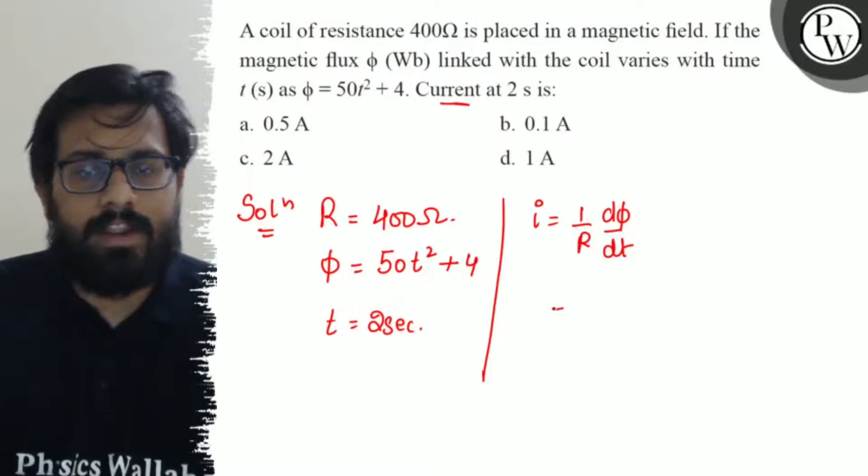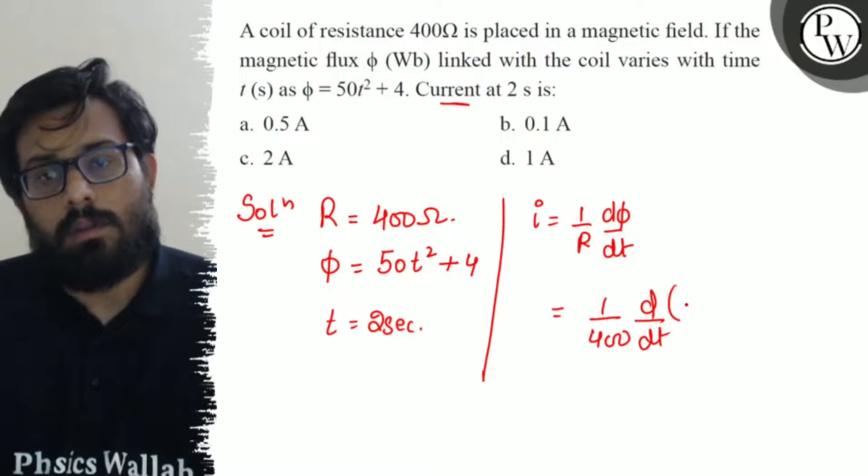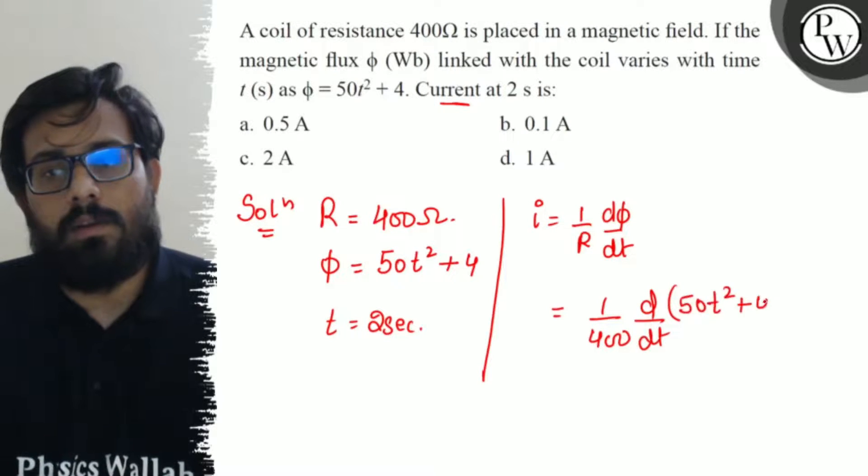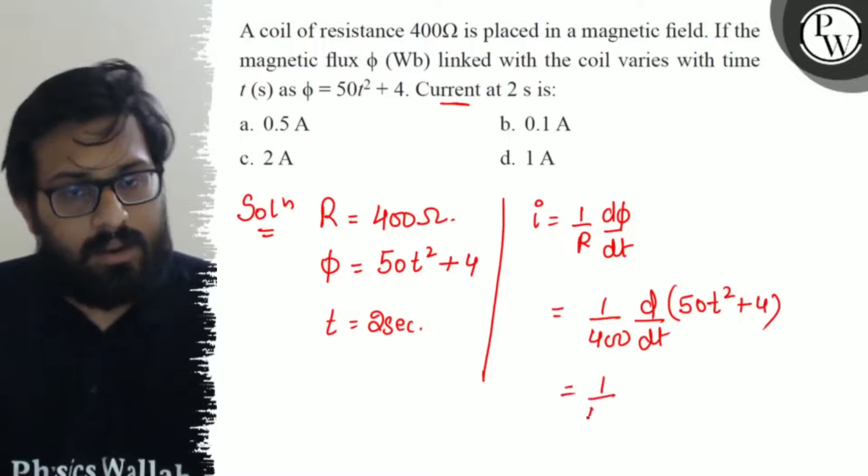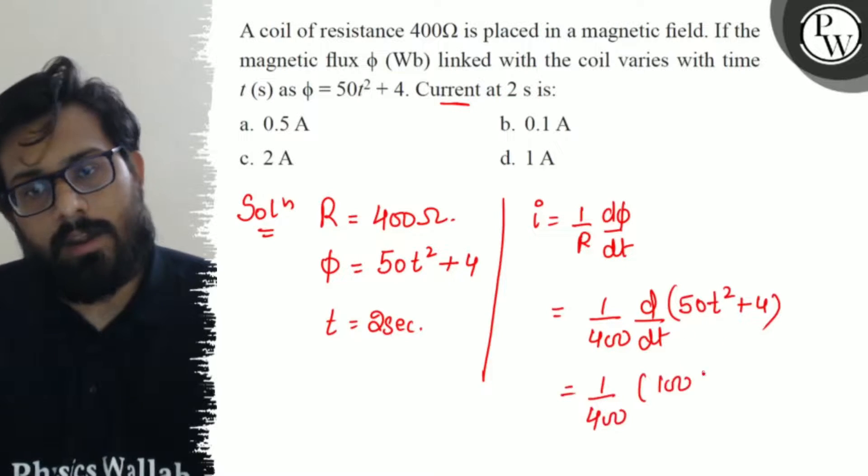So we have the formula 1 upon R dφ by dt. This gives us 1 upon 400 times d by dt of (50t² + 4). After simplification, 1 upon 400 times 100t.